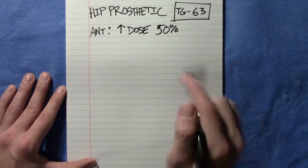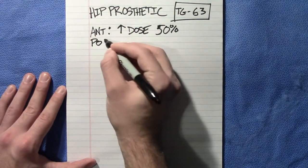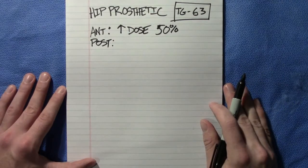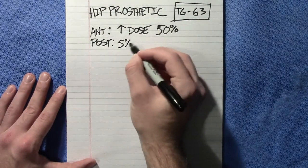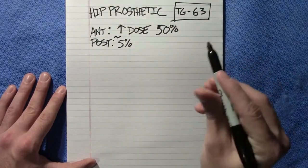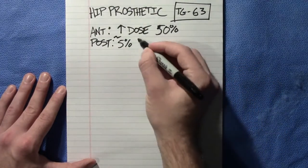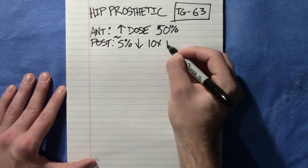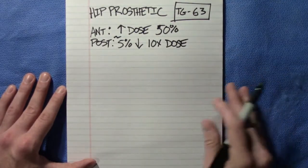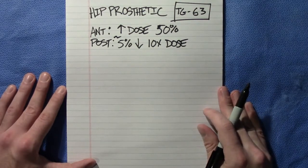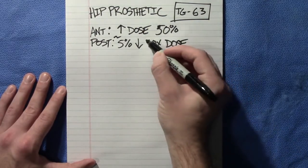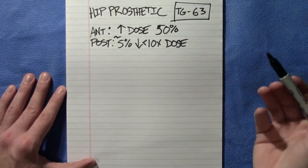Posterior, past the surface, we have approximately a 5% decrease for a 10x beam. This is simply because of the attenuation through the hip prosthetic. That applies to 10x and any beam less than 10x as well.